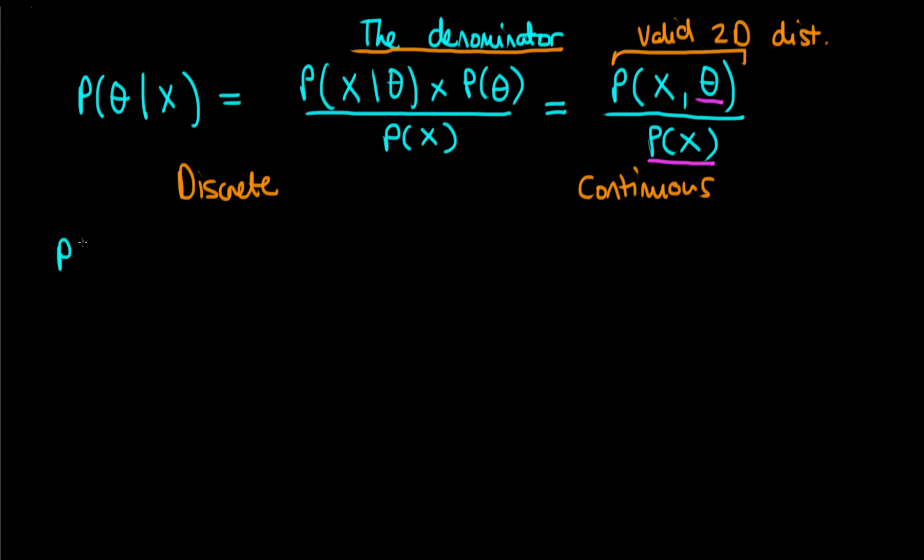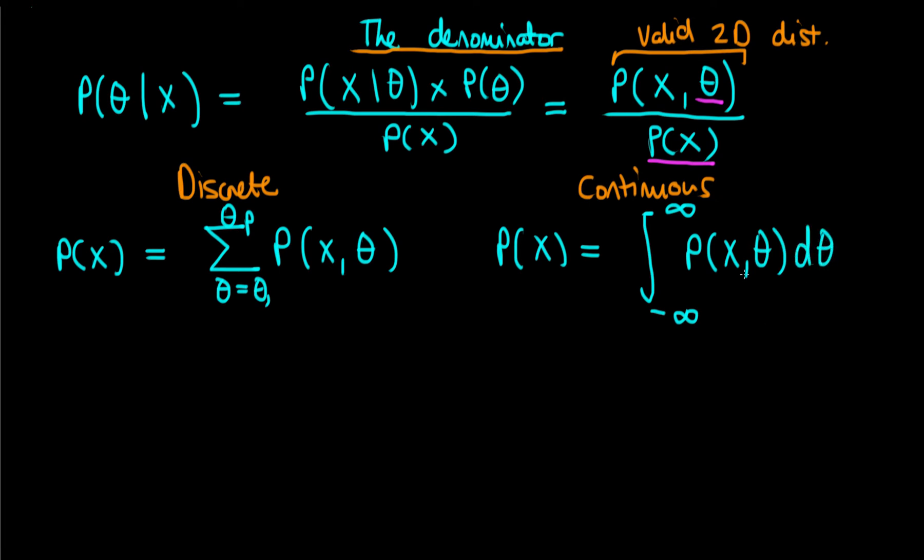In the discrete case we have P of x equals the sum over all possible values of theta, from theta equals theta 1 to theta p, of P of x and theta. Similarly in the continuous case we do the continuous version of marginalizing, which is an integral, the continuous analog of a sum. We integrate across the entire range of our parameter, from minus infinity to infinity, but in practice that will be whatever bounds your parameter has, of the joint distribution, the numerator of Bayes' rule P of x and theta with respect to theta.